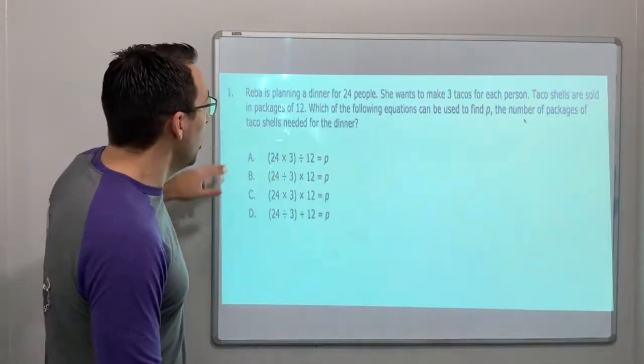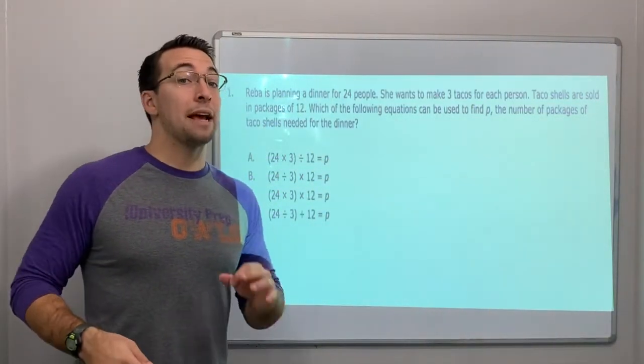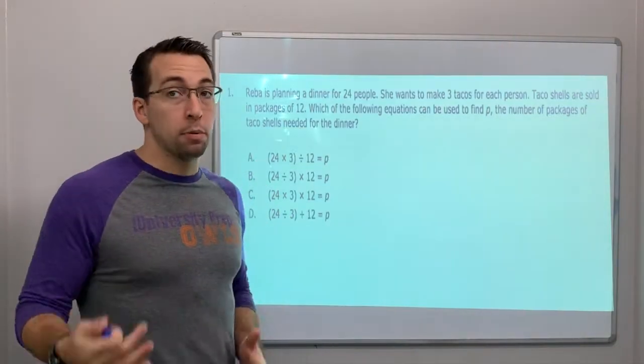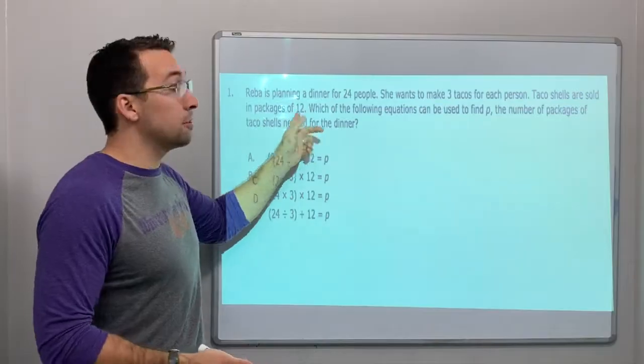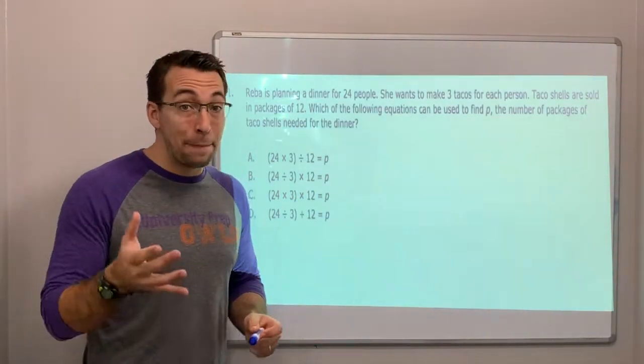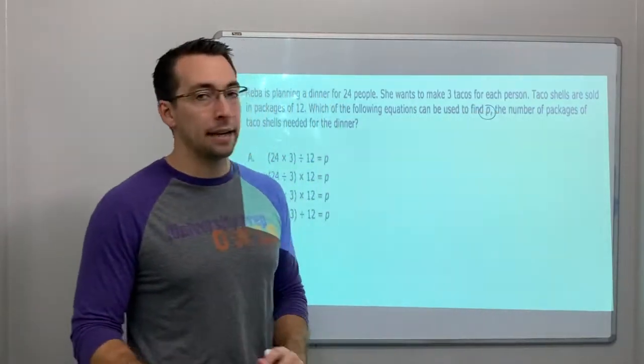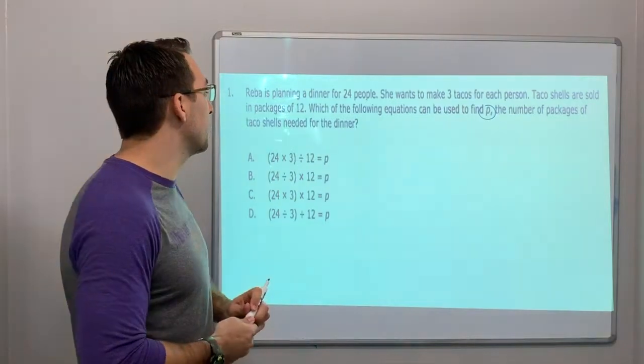So number one: Rebecca is planning a dinner for 24 people. She wants to make three tacos for each person. Taco shells come in packages of 12. Which of the following equations can be used to find P, just a random letter, P for package, the number of packages of taco shells needed for the dinner?